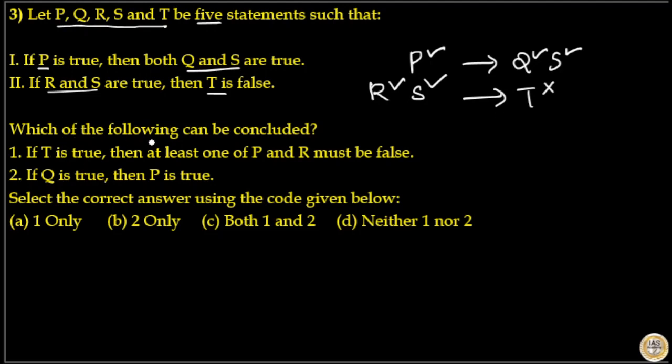Which of the following can be concluded? Conclusion 1: If T is true, then at least one of P and R must be false.